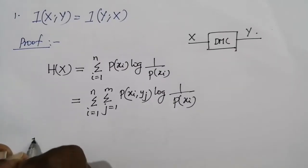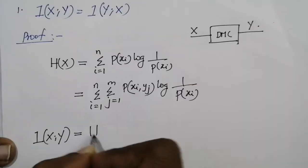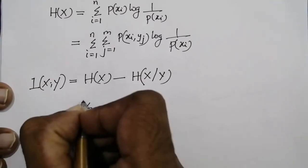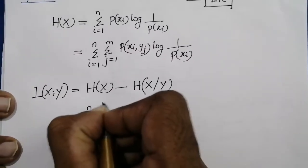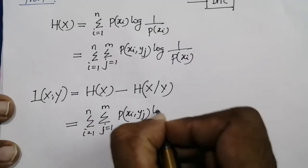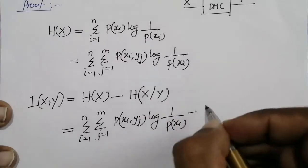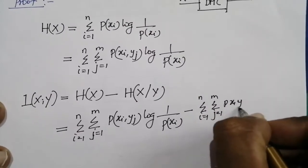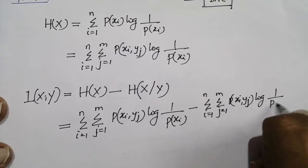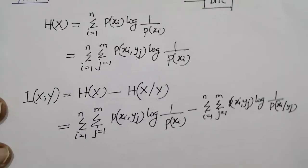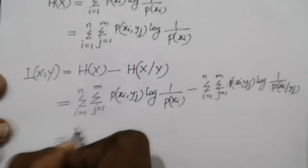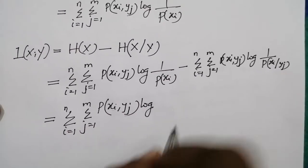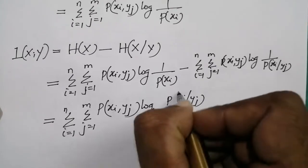From the definition of mutual information, we know that I(x;y) = h(x) - h(x|y). So h(x) can be written as the double summation over i from 1 to n and j from 1 to m of p(xi,yj) log(1/p(xi)), and h(x|y) can be written as the double summation over i and j of p(xi,yj) log(1/p(xi|yj)). This gives us the double summation of p(xi,yj) multiplied by log(p(xi)/p(xi|yj)).